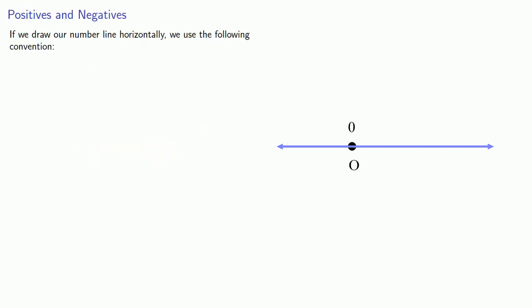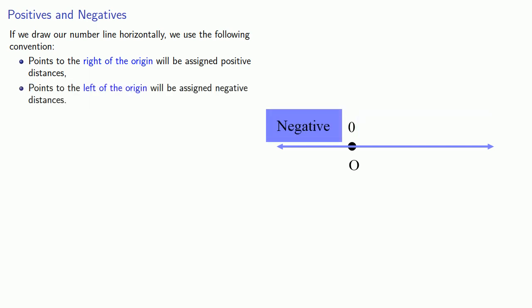Remember, the numbers we're assigning correspond to the distance from the origin. But we could be on the right or on the left. And so we'll do the following. Points to the right of the origin will be assigned positive distances. And points to the left of the origin will be assigned negative distances.